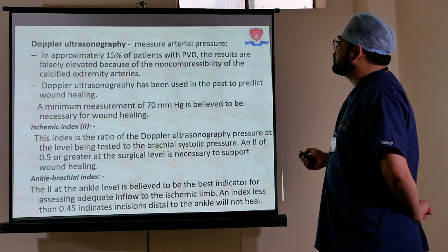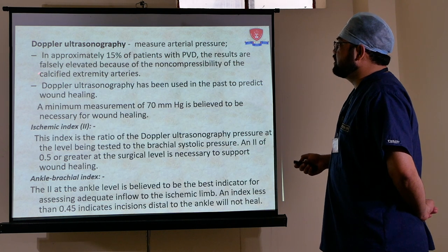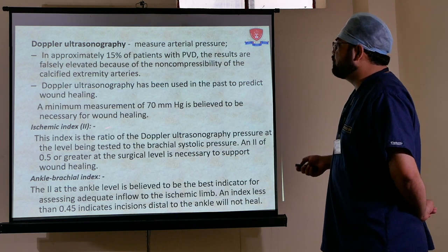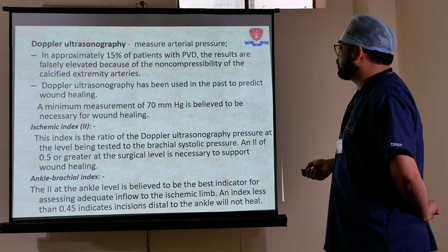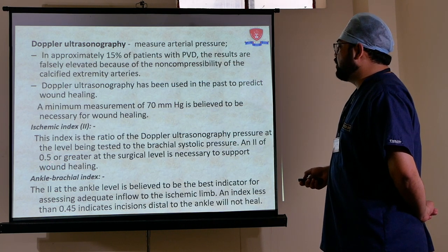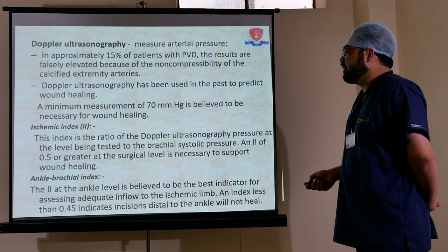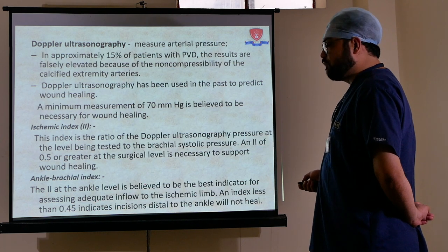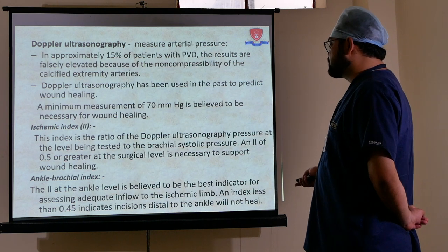Doppler ultrasonography: in approximately 15% of patients with PVD, results are falsely elevated due to non-compressibility of calcified extremities. A minimum measurement of 70 mmHg is necessary for wound healing. The ischemic index is the ratio of Doppler pressure at the level being tested to the brachial systolic pressure; a value of 0.5 or greater is necessary to support wound healing. The ankle-brachial index is the best indicator for assessing inflow; an index less than 0.45 indicates incisions distal to the ankle will not heal.